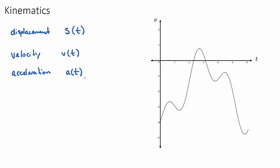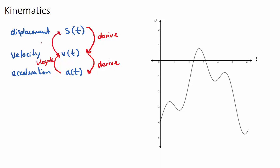When given these three functions, moving between them requires either differentiation or integration. If you have the displacement function and want the velocity function, you differentiate. The derivative of displacement is velocity, and the derivative of velocity is acceleration. If you want to go the other way — for example, from acceleration to velocity — you integrate. The same applies going from velocity to displacement.